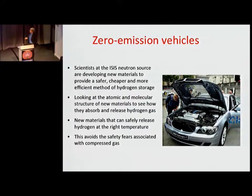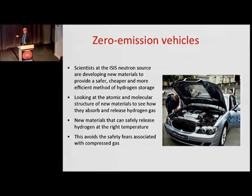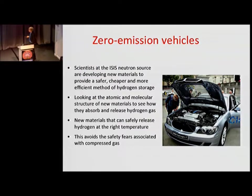The value to the economy of being able to look inside materials and understand what's really going on is huge. Another example: scientists at ISIS are developing new materials to provide cheaper and more efficient methods of hydrogen storage. Neutron scattering is particularly good at seeing what hydrogen is doing. You need structures at the molecular level that can absorb hydrogen and release it when you need it — storing it safely without the risk of explosion — avoiding the need for large vats of compressed hydrogen gas.